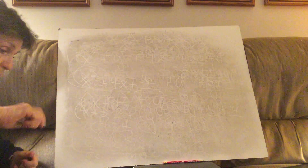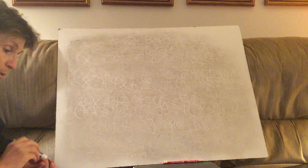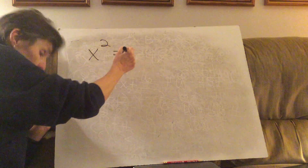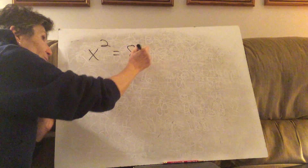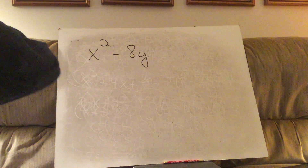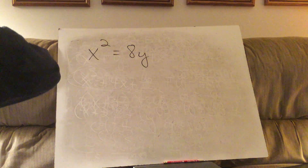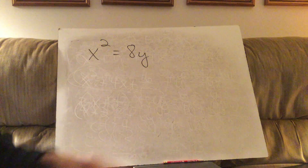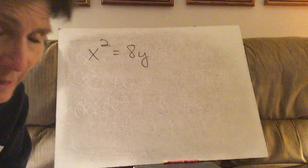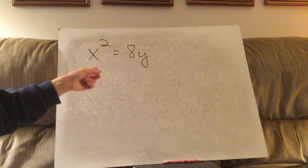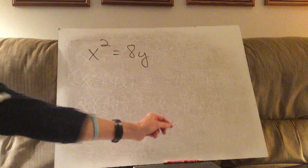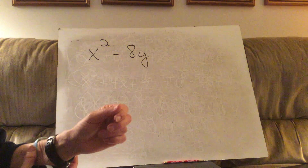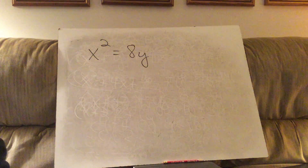Part two deals with parabolas. You know this is a parabola because way back at the beginning of the year we talked about the squaring function. When we have an equation with only one squared term — unlike the circle equations which had two squared terms — this is a parabola.